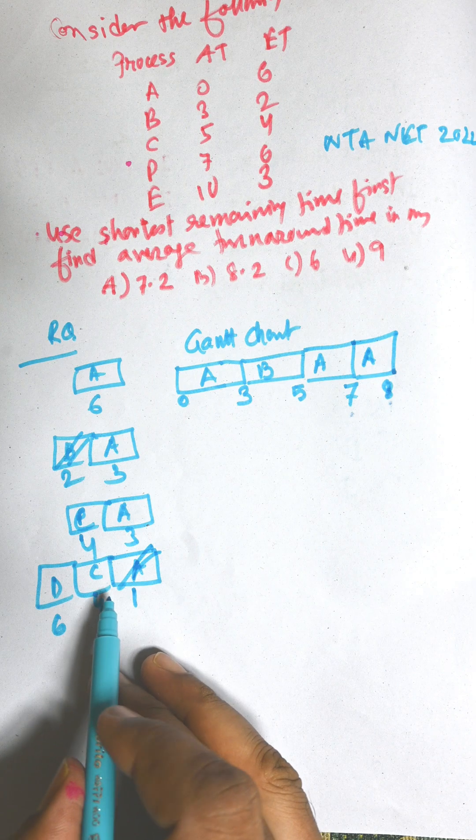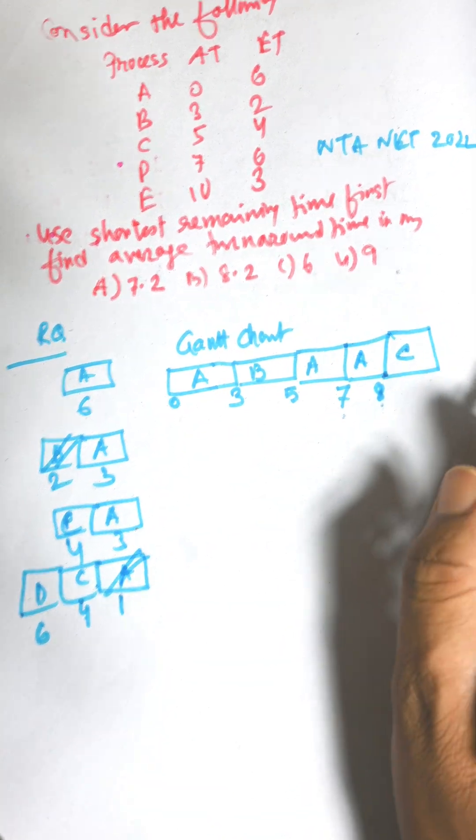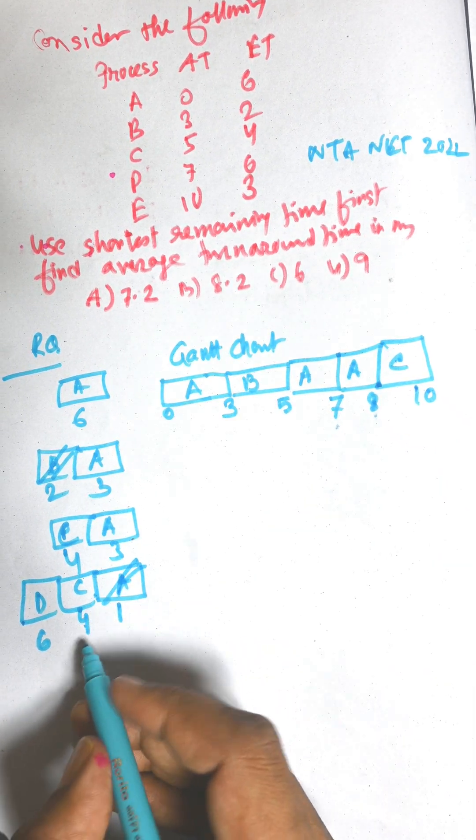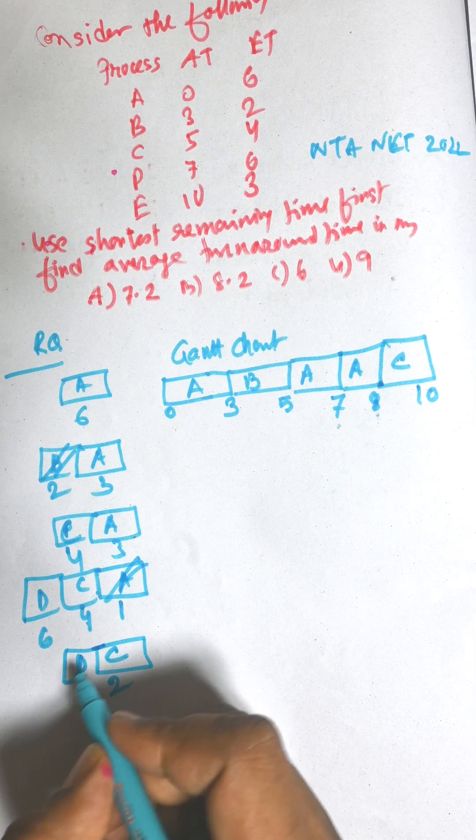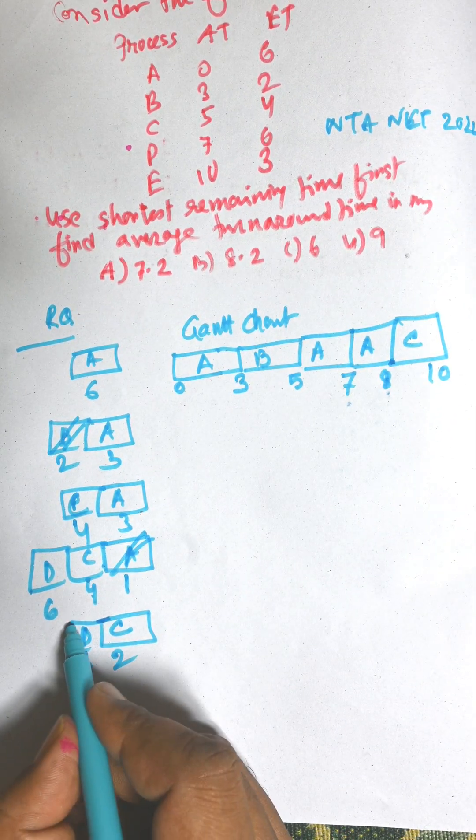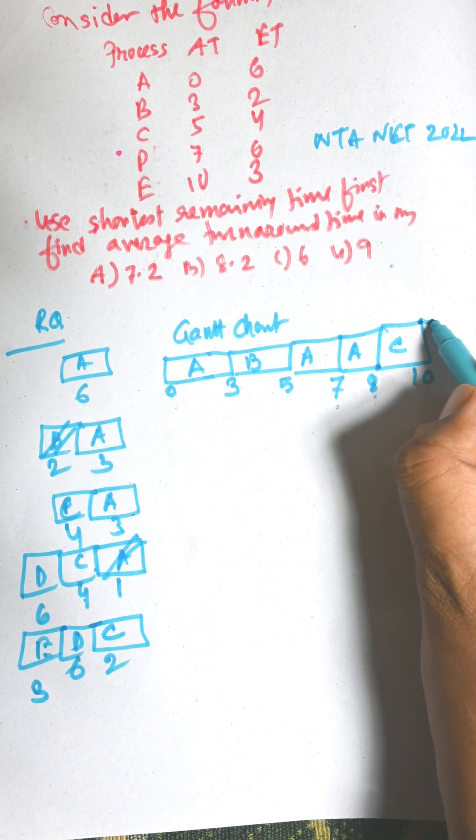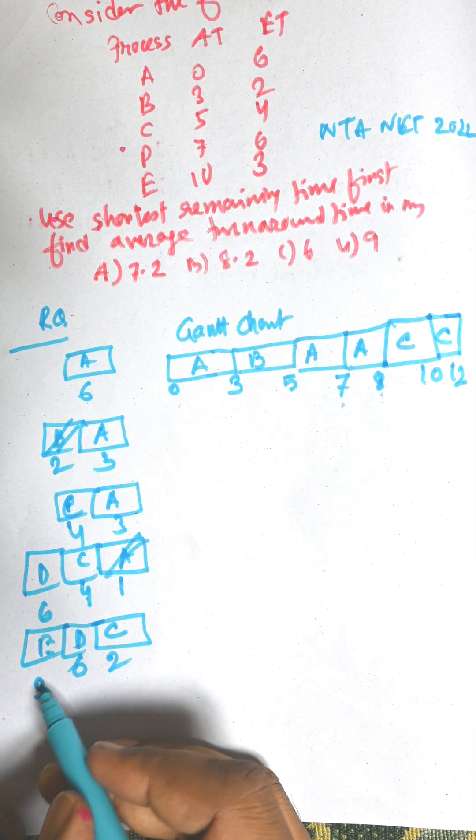Now, among C and D, C is the shortest job. So C will start execution up to 10. Now, remaining time of C is 2, D is 6, and E is 3. So shortest job is C. So C will finish its execution at 12.